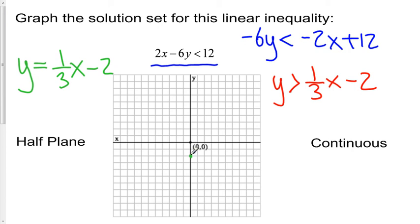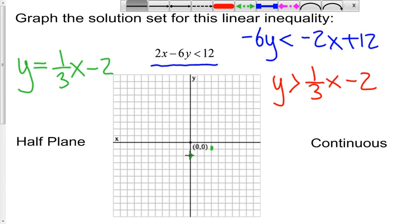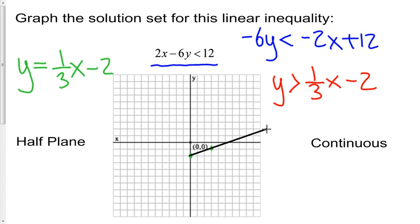I have a y-intercept of negative 2. I go up 1 over 1 2 3 and then I just use my line tool and we'll add a line here. And there's my boundary line.